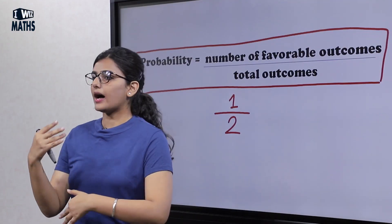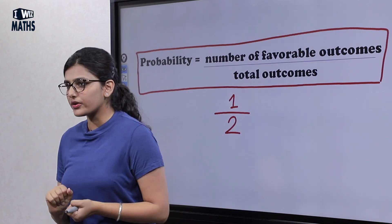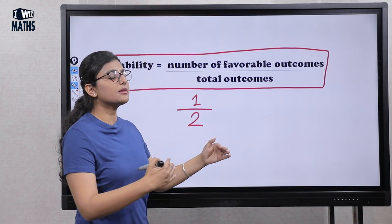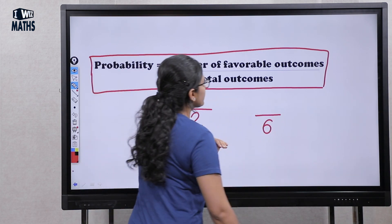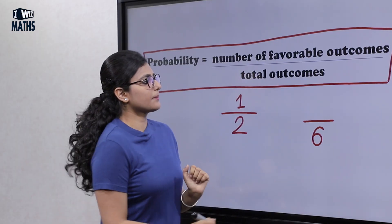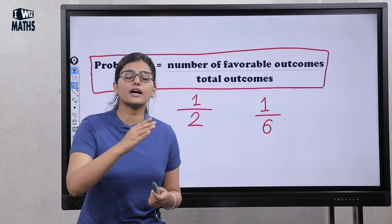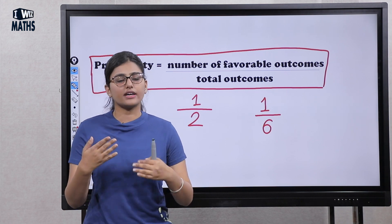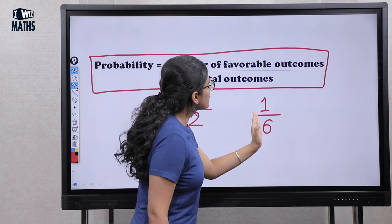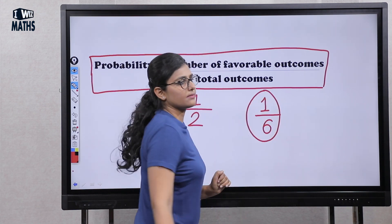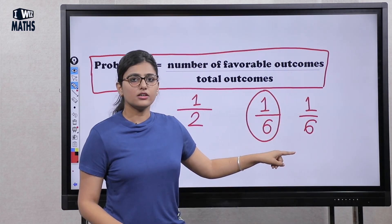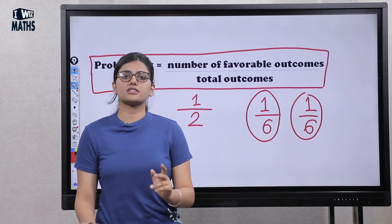If you are playing with a die, what is the probability of getting number 4? The total numbers are 1 to 6, so total outcomes are 6. Number 4 is a single number, and the chances are equal for each number — whether 1, 2, 3, 4, 5, or 6. So the number of favorable outcomes is 1, and total outcomes is 6. The probability of getting 4 is 1 by 6. Similarly, the probability of getting 5 is also 1 by 6, since it is also a single number out of 6.